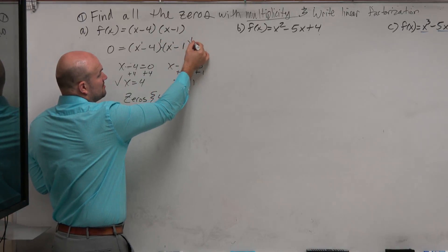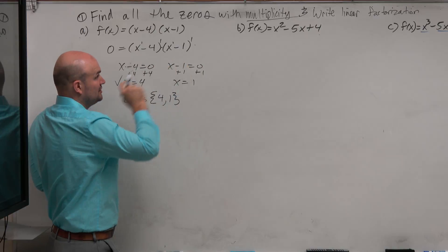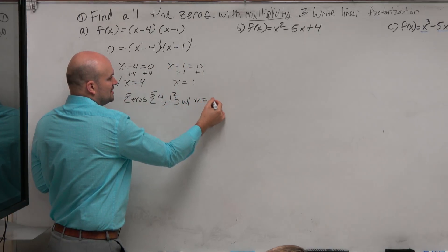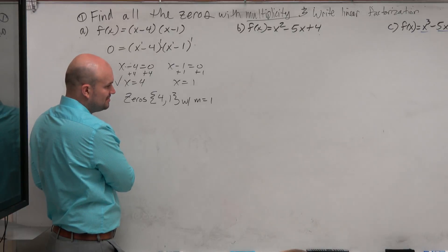So we look at the multiplicity, which is the power of the factors based on our definition of multiplicity. And we can see that both of these have a multiplicity equal to 1. Now that's not always going to be the case.